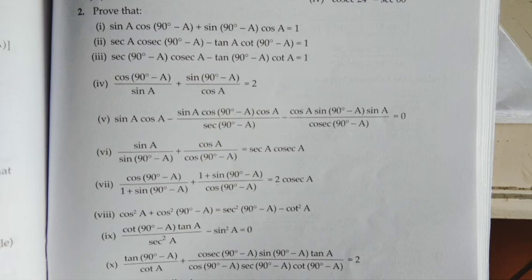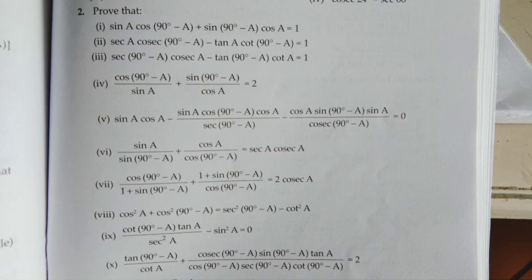Number 7: similar to exercise 12. Since we have fractions, we take the LCM, then use whole square and multiply through to get the right hand side.